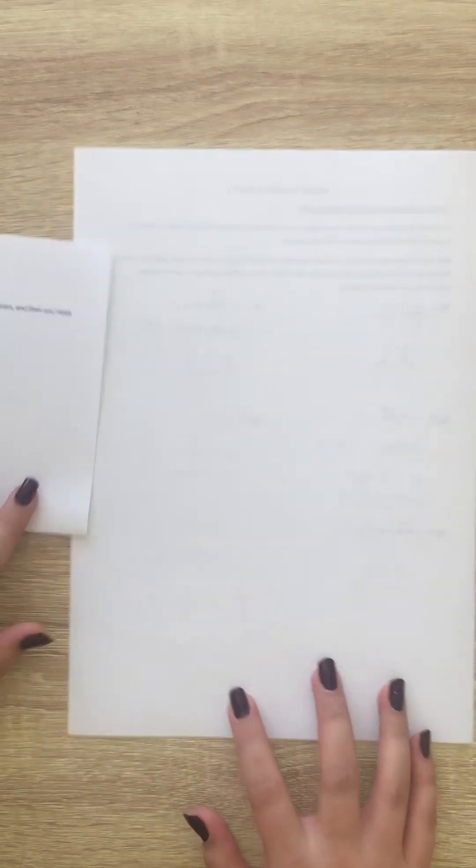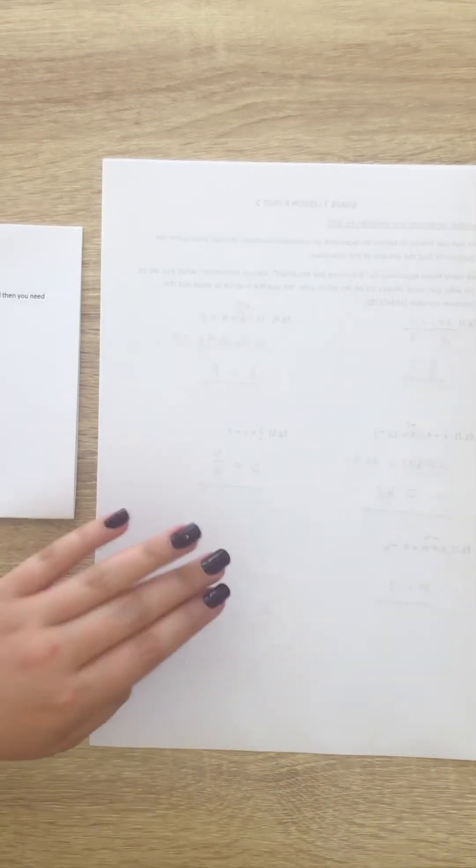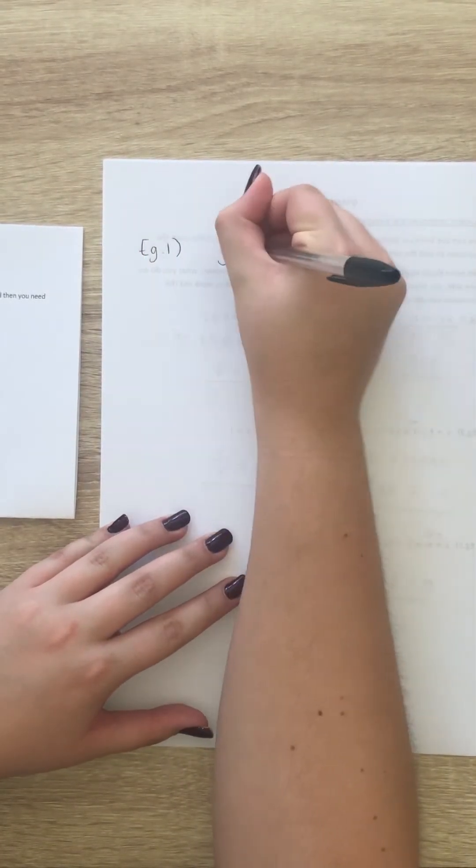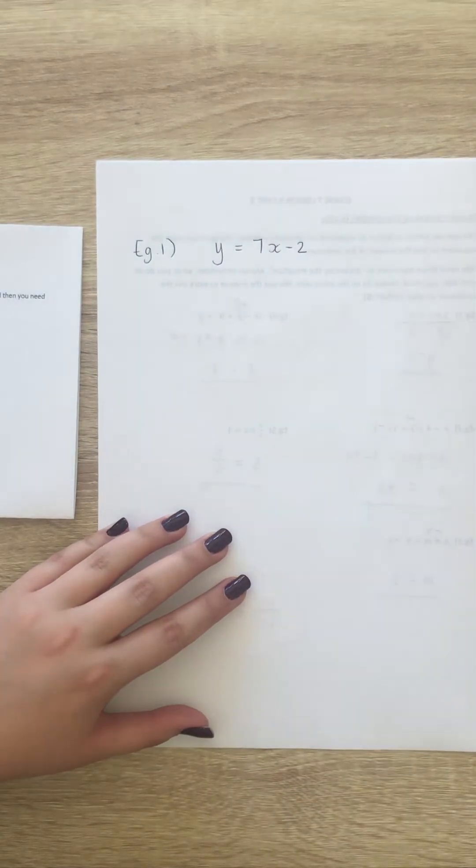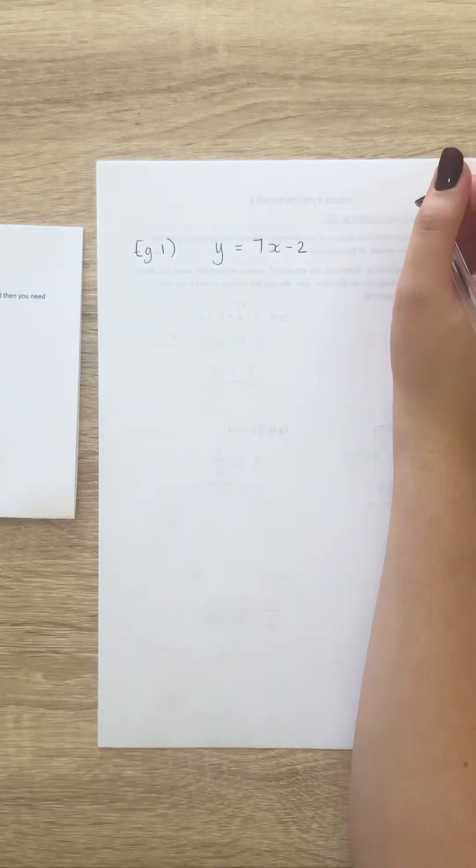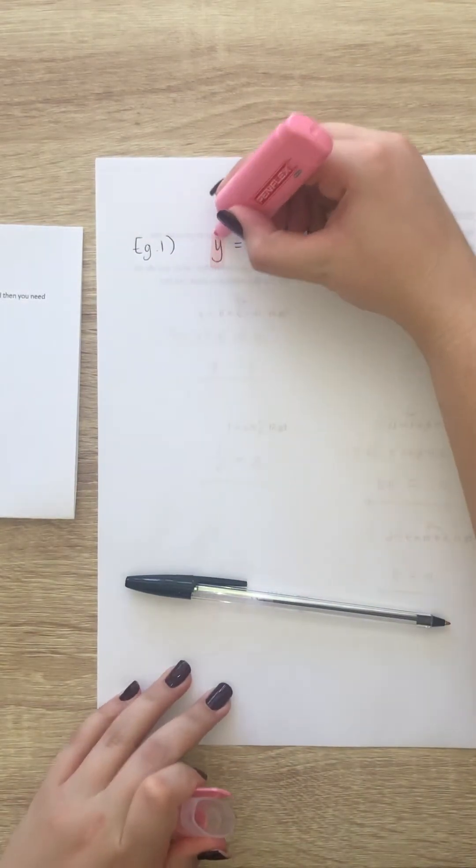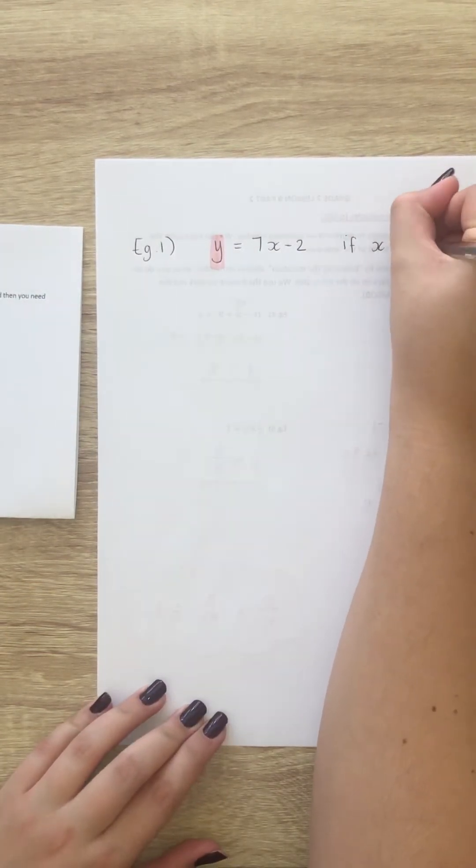So, the first example, I'm just going to do it on the back of this page so that you're able to see. So, the first example says, if y is equal to 7x minus 2, determine the value of y. So, the y, this value, is the one we are trying to solve. And they tell you if x is equal to 3.